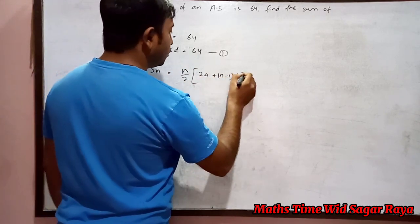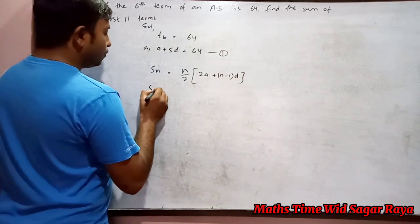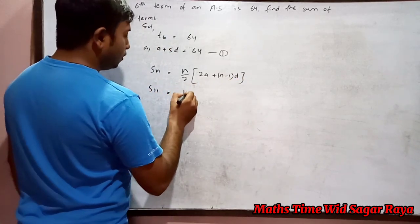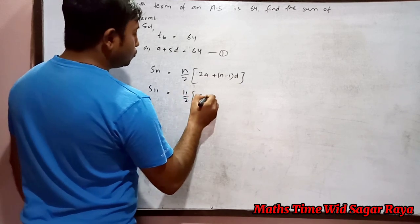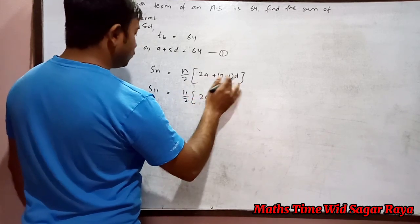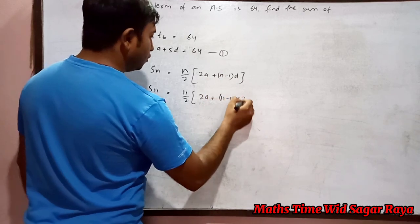So we are finding here s11, so 11 by 2 times 2a plus n minus 1 means 11 minus 1, which is 10d.